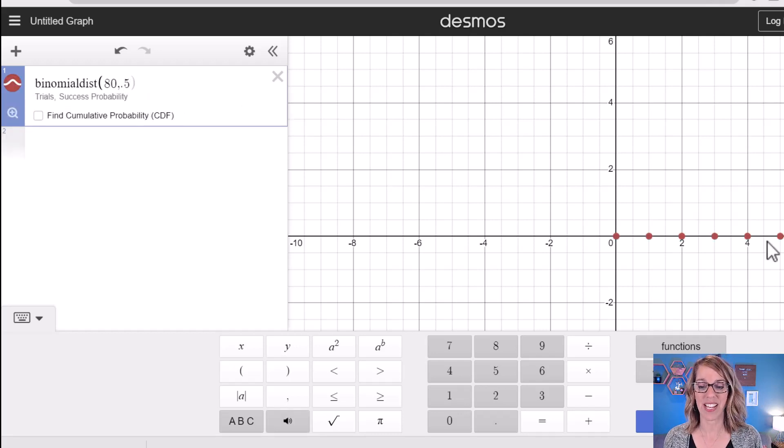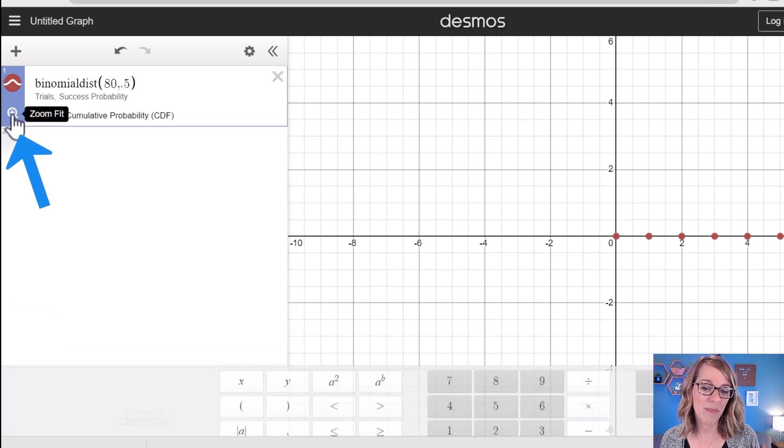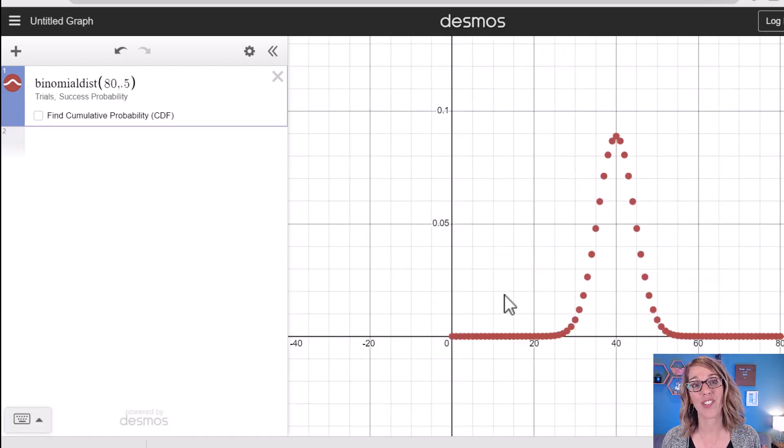So it gives me a graph. If I click on this zoom fit button right here, it's going to give me a much nicer looking graph. And you can see that we're expecting 40 as the most frequent number, and it's got that highest probability. Really nice binomial distribution there.